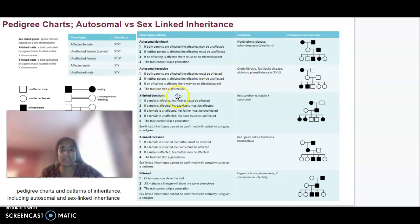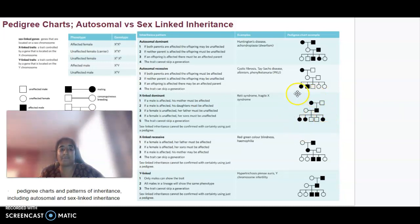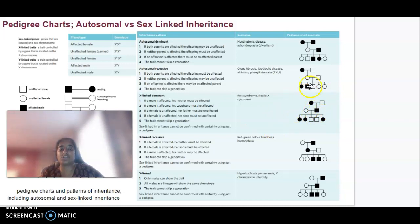For X-linked dominant: if a male is affected, his mother must also be affected; if a male is affected, his daughters will also be affected. If a female is unaffected, her father must also be unaffected, and her sons must also be unaffected. Because it is dominant, the trait cannot skip a generation. Sex-linked inheritance can't be confirmed with certainty from a pedigree alone, but we can show it is a possibility. An example is fragile X syndrome.